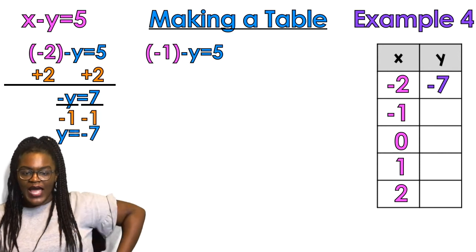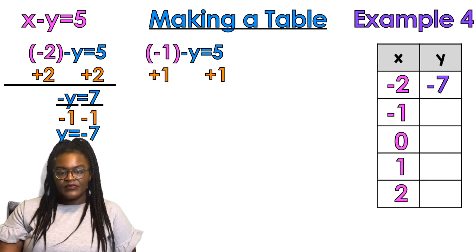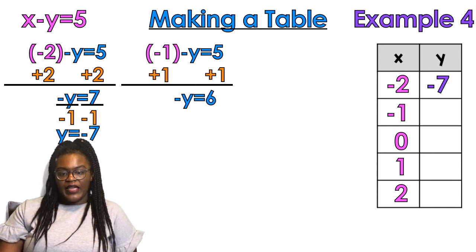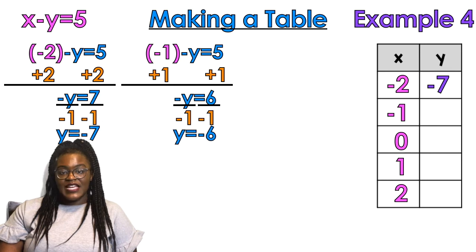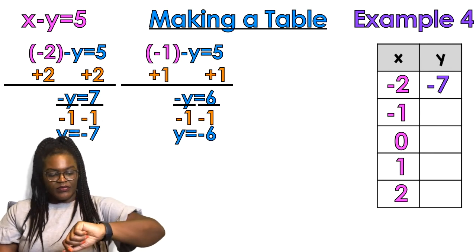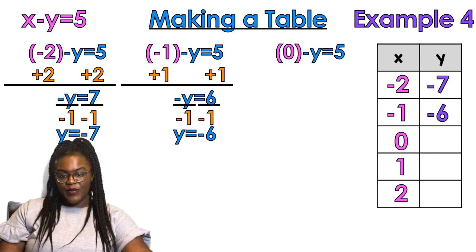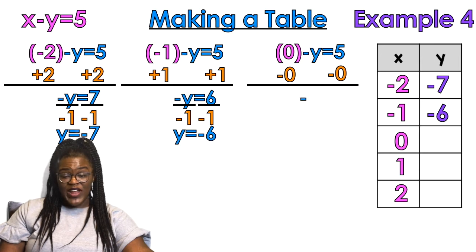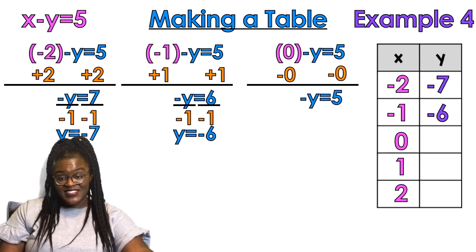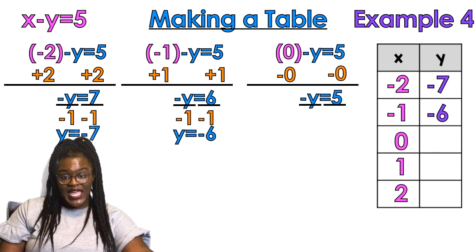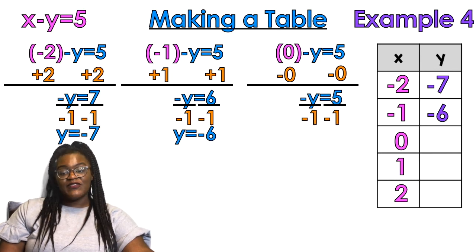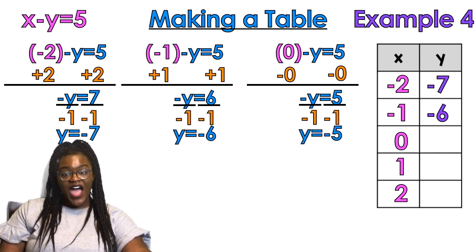Now I'm doing negative 1 minus y equals 5, so plus 1 on both sides: negative y equals 6, divide by negative 1, y equals negative 6. That goes in my table. Then 0 minus y equals 5 — I don't have to subtract 0 but for consistency I do it — divide by negative 1, y equals negative 5.